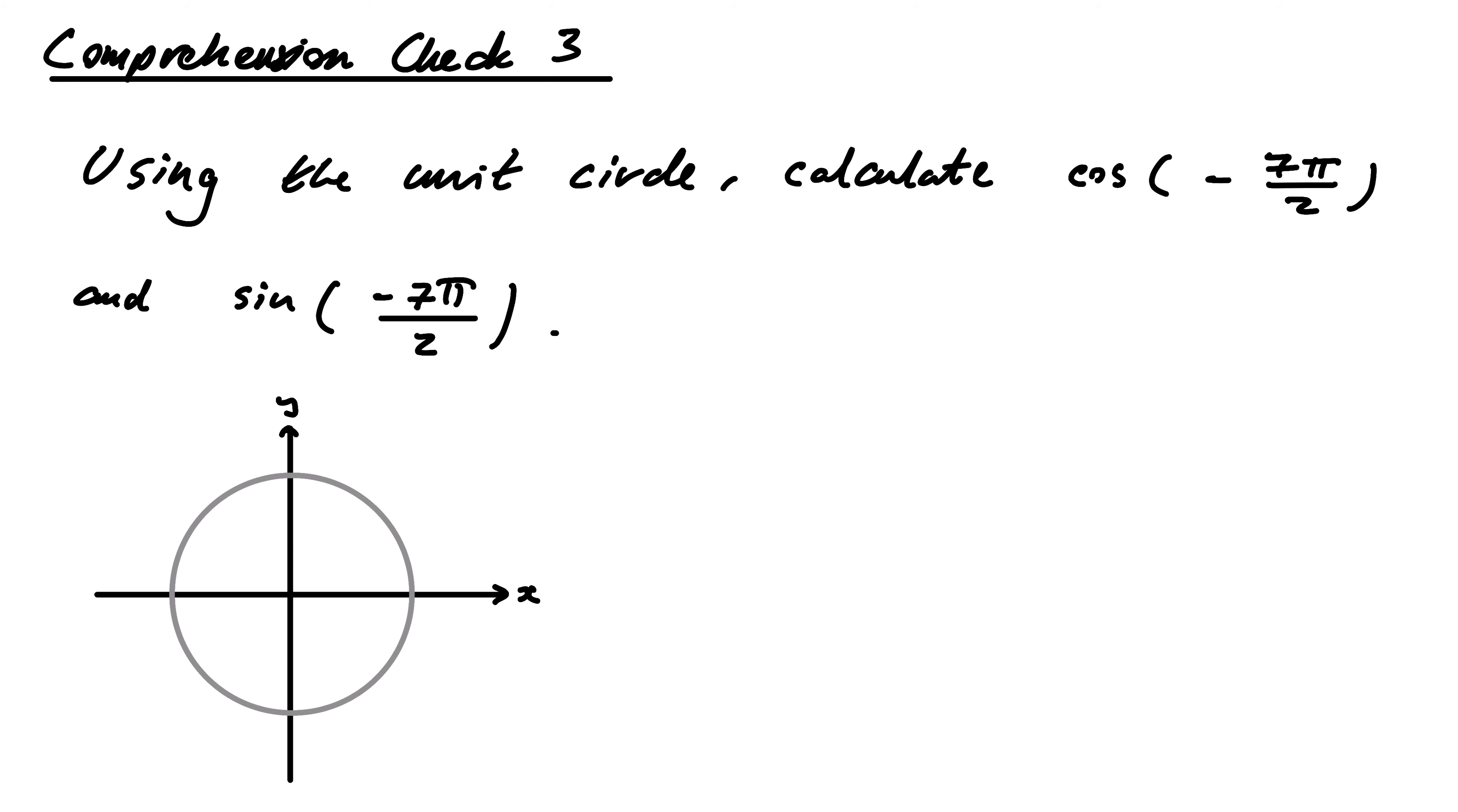So, minus 7π over 2, let's just have a little moment. Minus 7π over 2. So that's equal to 7 times minus π over 2. And what's π over 2? π over 2 is a right angle.